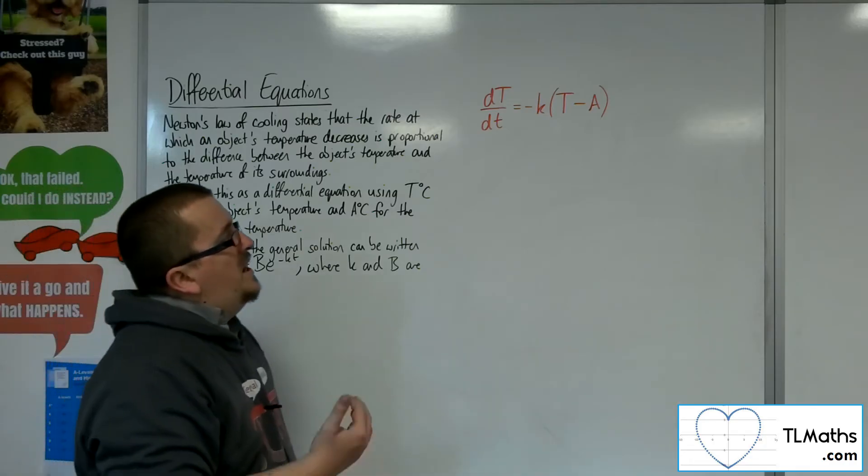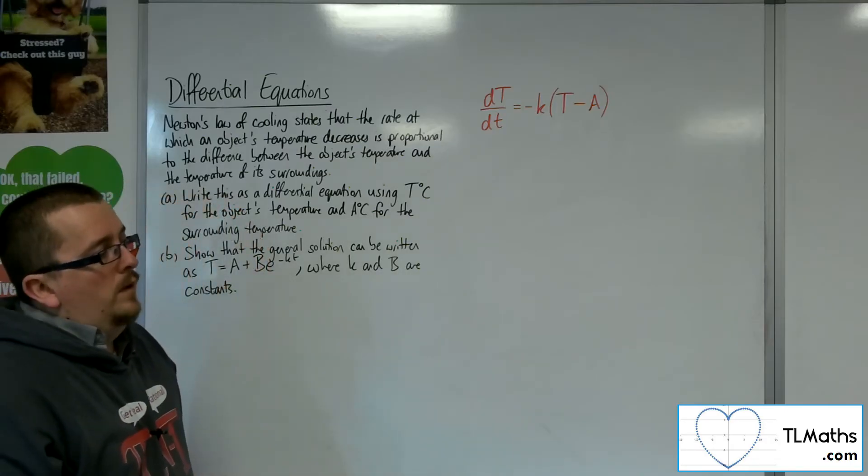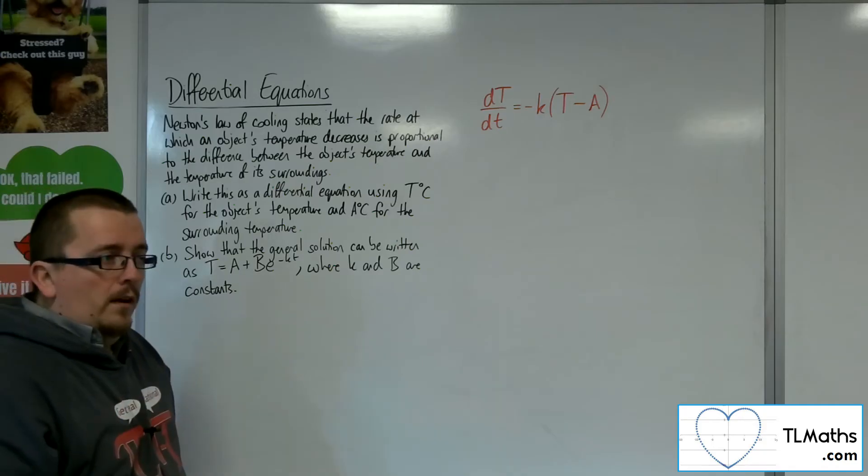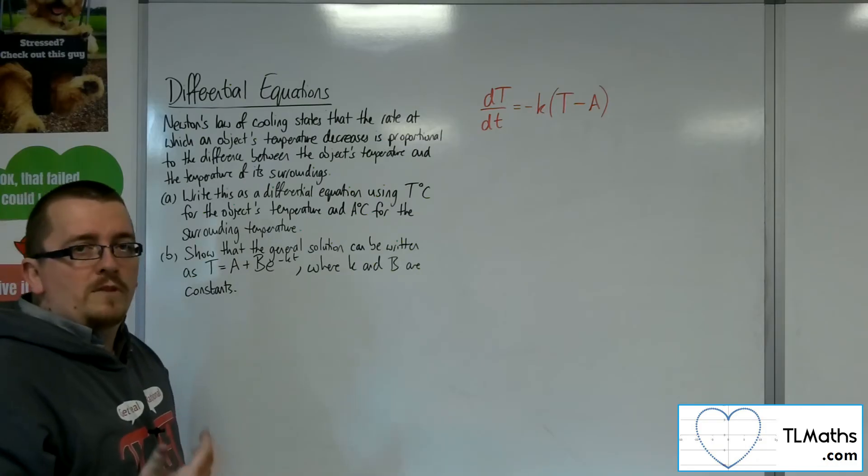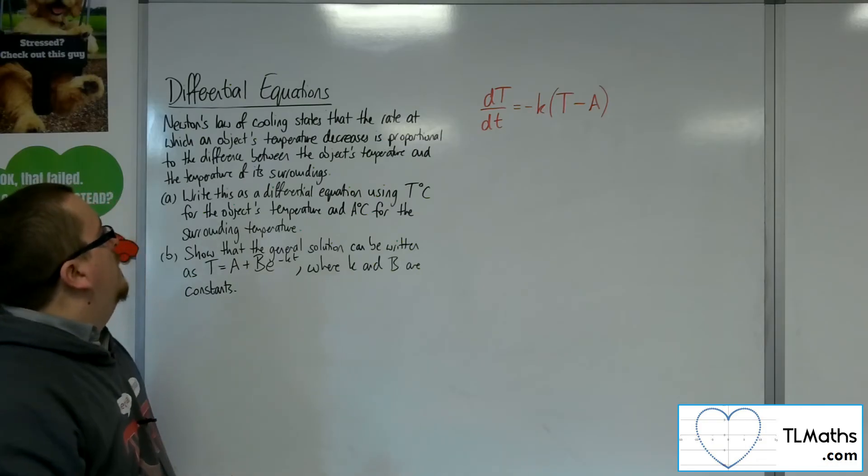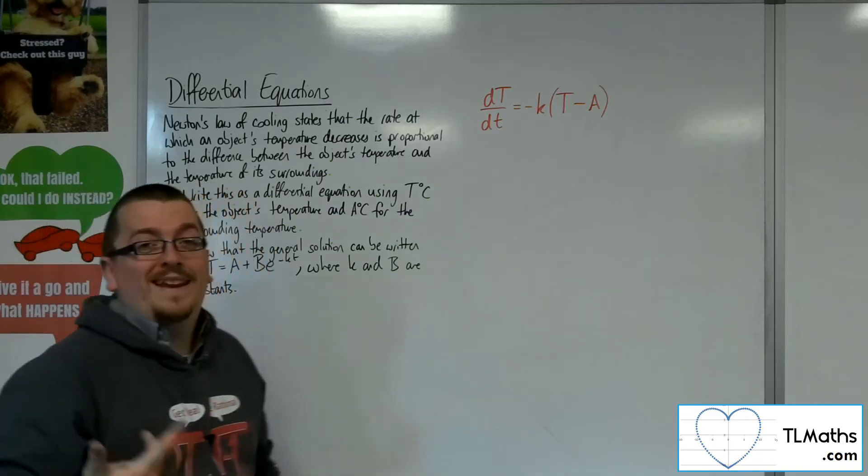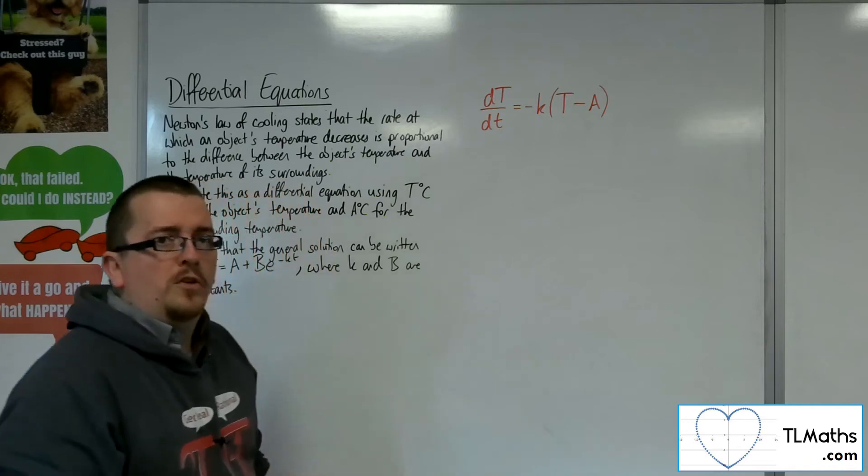So the T minus A, you might be thinking, well, why isn't it equal to zero? Well, those two temperatures in our model, they'll never be precisely the same. It will never reach precisely the temperature of its surroundings. That's because of the nature of the fact that we're going to get an exponential through it. It's a limitation of the model, really.